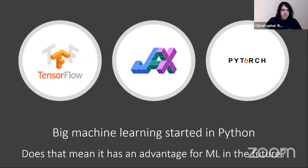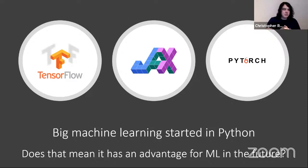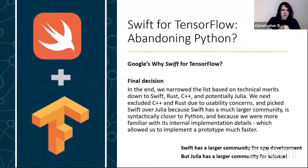A lot of the big machine learning started in Python — TensorFlow, JAX, PyTorch. These frameworks really started in Python, so a lot of people think there's an advantage there. They've had developer resources, Google and Facebook involved. So does that mean machine learning will continue happening in Python? It might seem like Python's past means Python is the future, but I want to make the case that it's not as clear-cut as you might think.